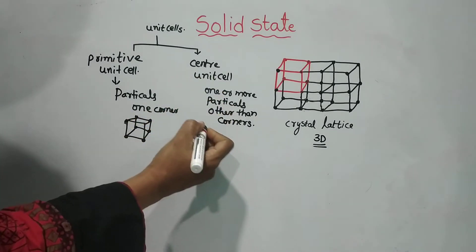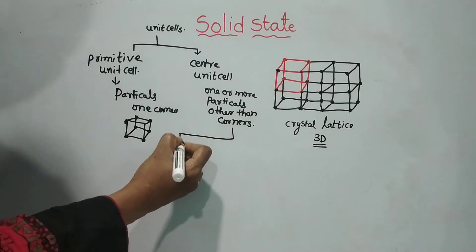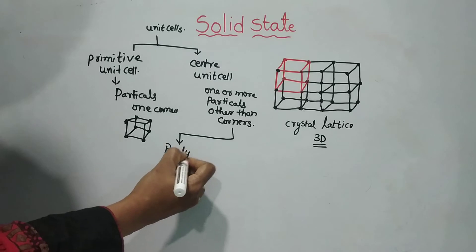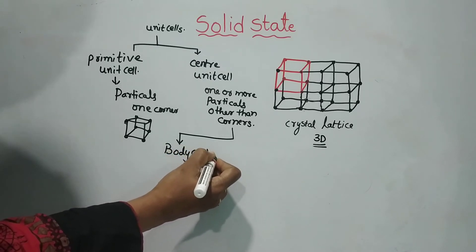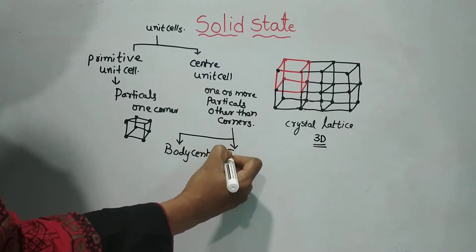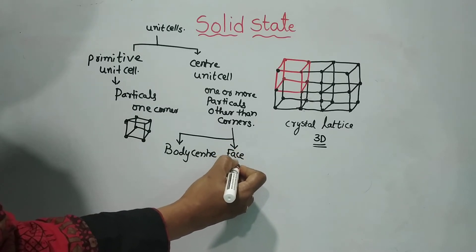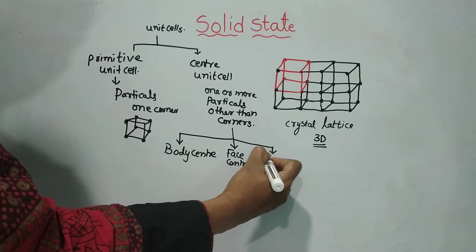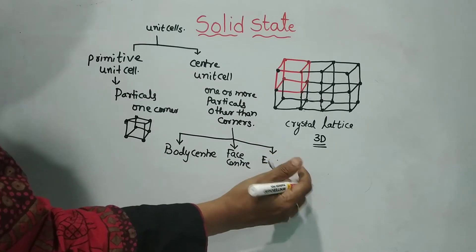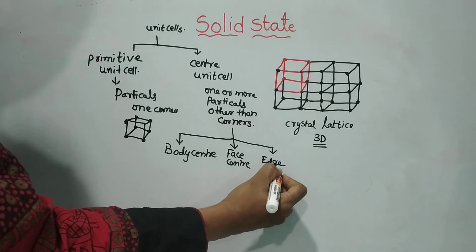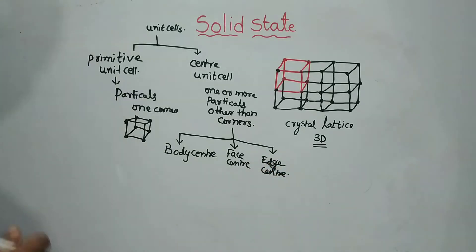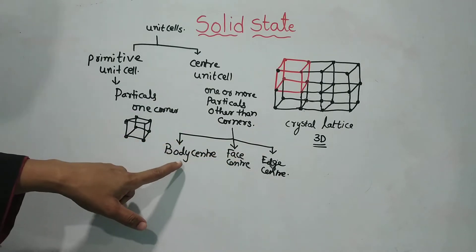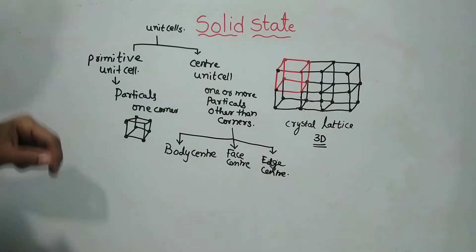The centered unit cell has one or more particles other than at the corners. There are three types of centered unit cells: body center, face center, and edge center.